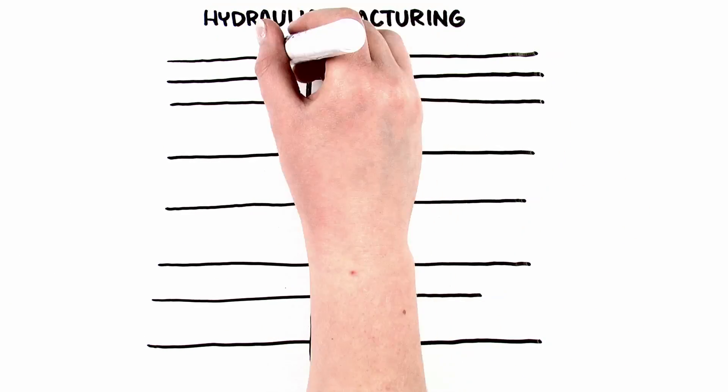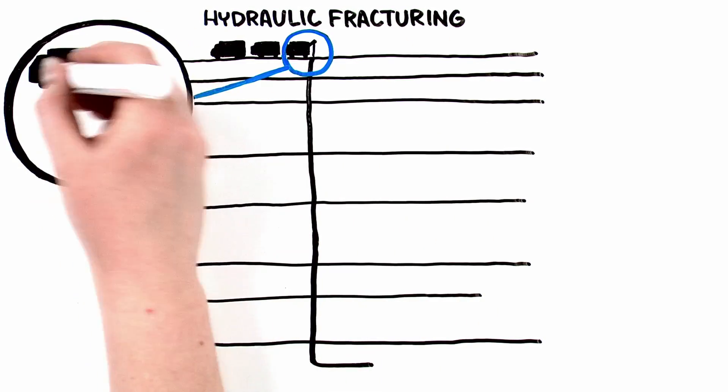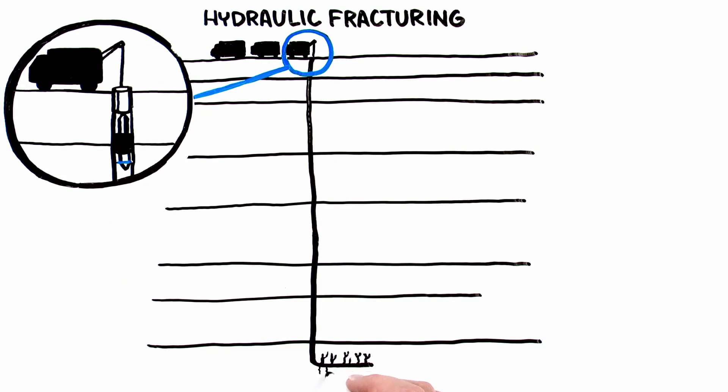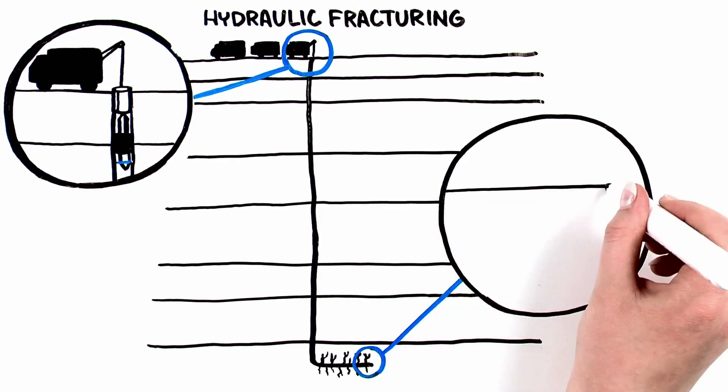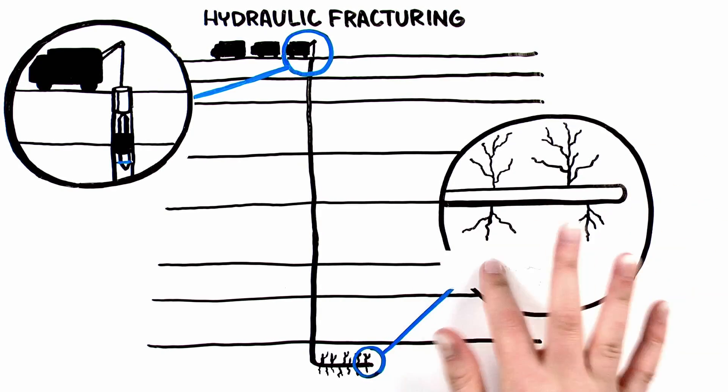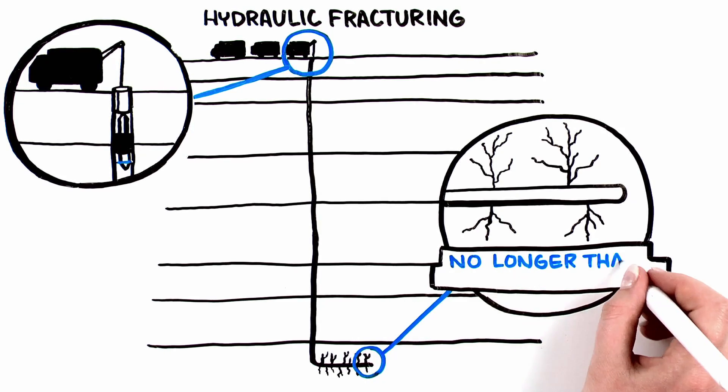To start, a series of small charges are set off along a portion of the lateral part of the wellbore, creating small fissures in the shale. Then a fluid mixture is pumped down into the formation at pressure to open up additional cracks or fractures in the shale.